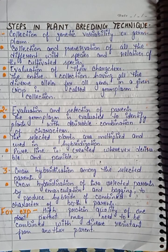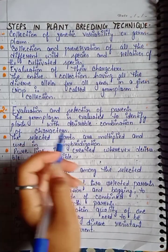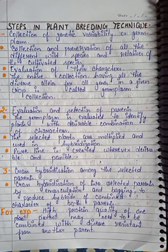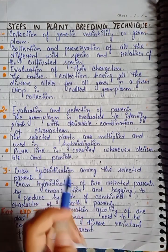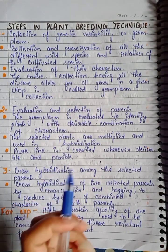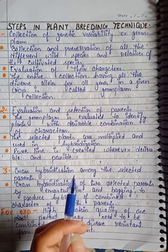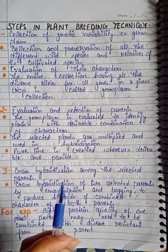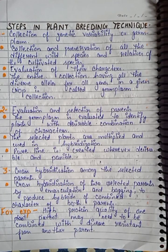The second step is evaluation and selection of parents. The germplasm is evaluated to identify plants with desirable combinations of characters. Selected plants are multiplied and used in hybridization. Pure lines are created wherever desirable and possible — where we get desirable characters, we create a pure line. Pure line breeding results in plants and animals that have the same characters passed on to many generations.